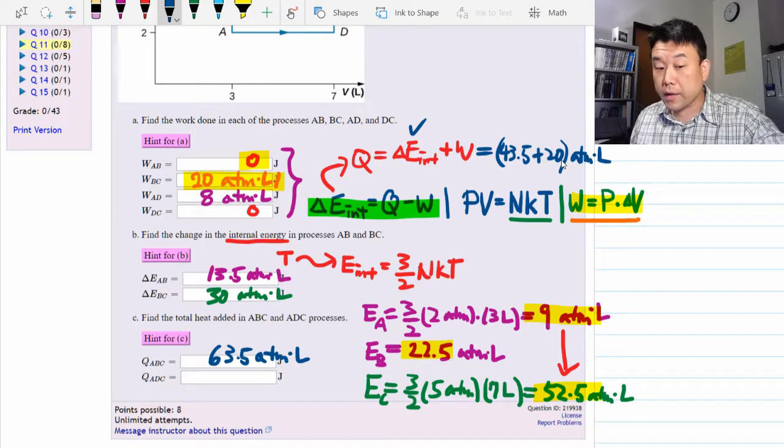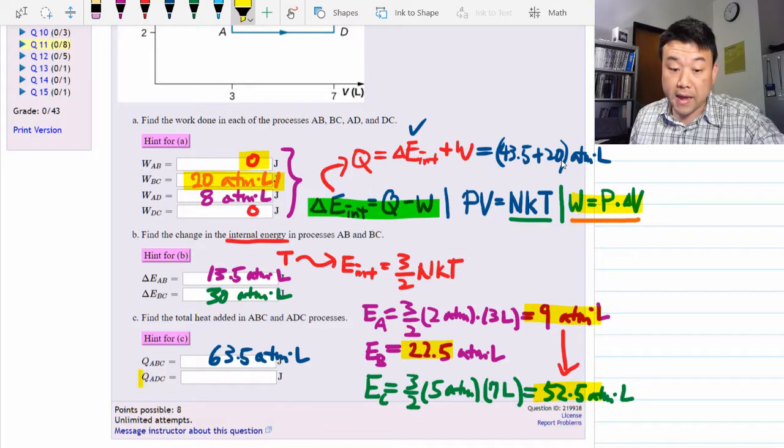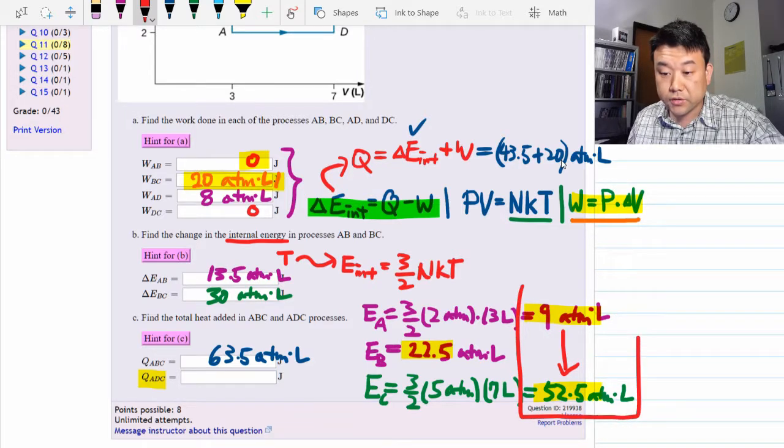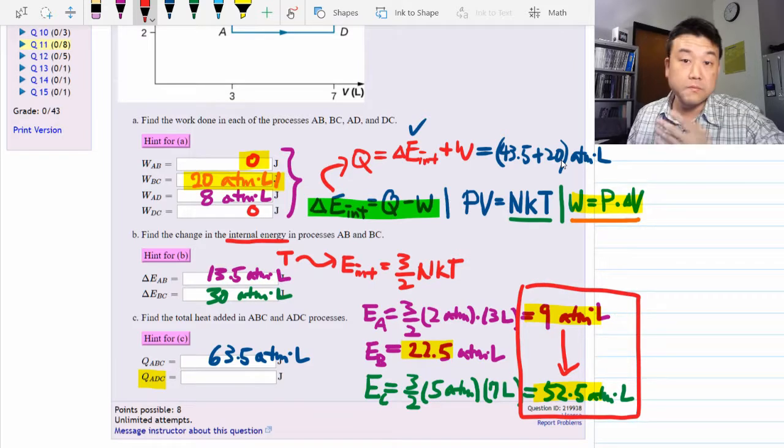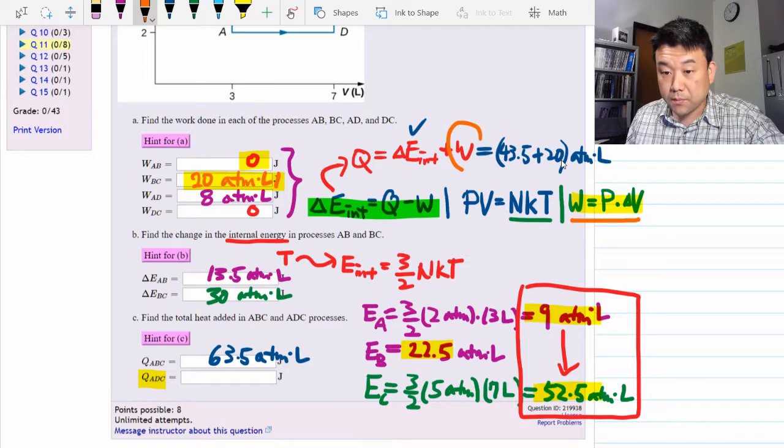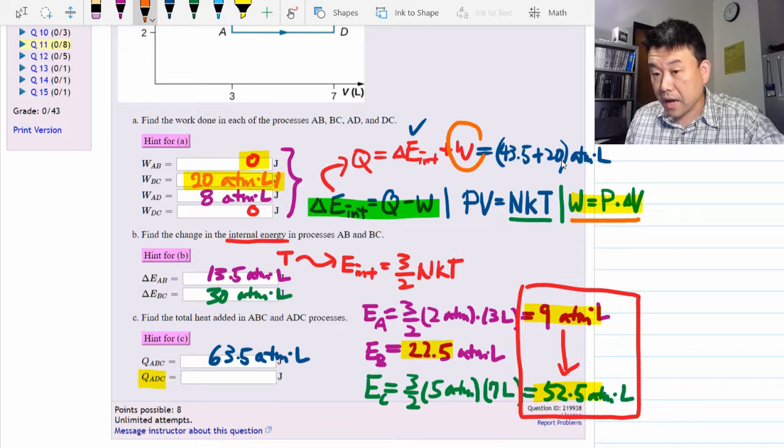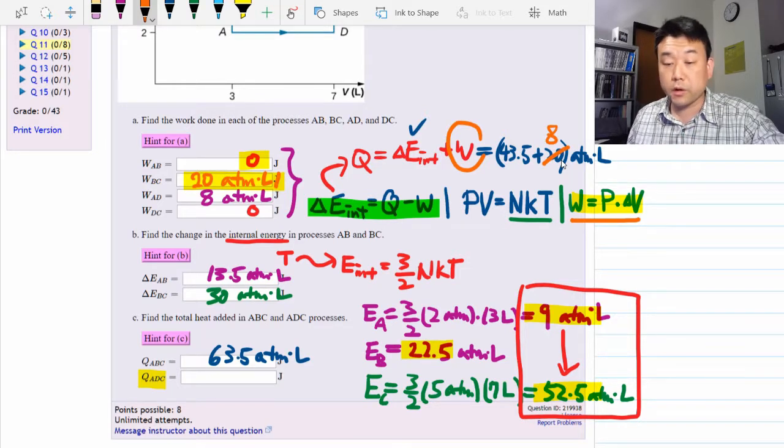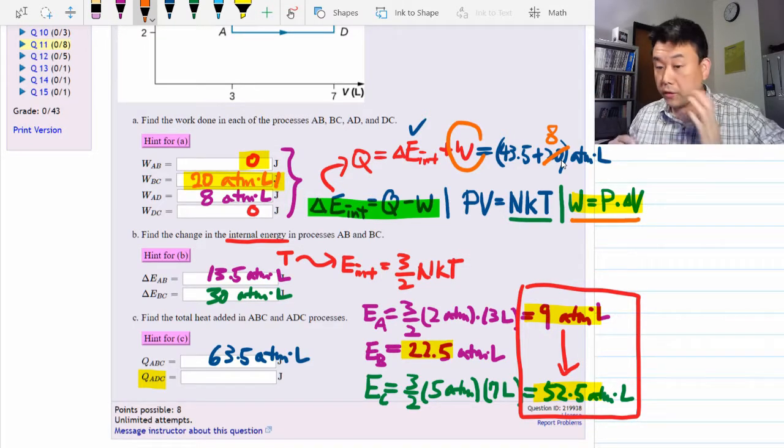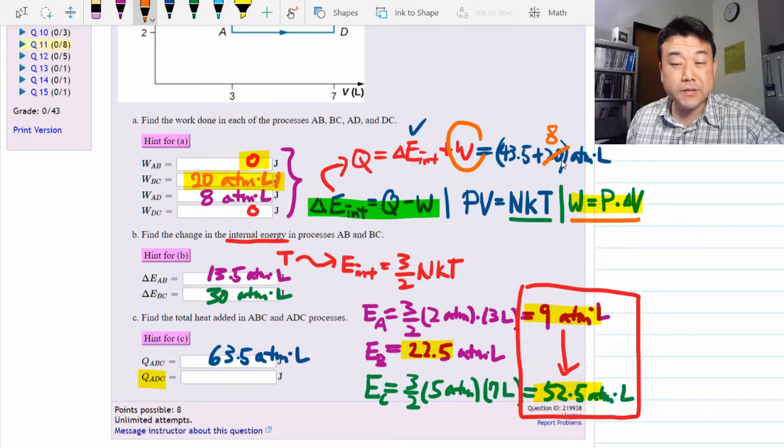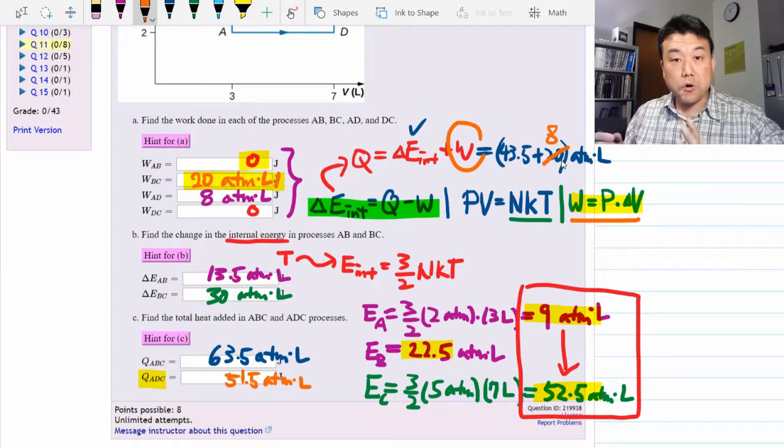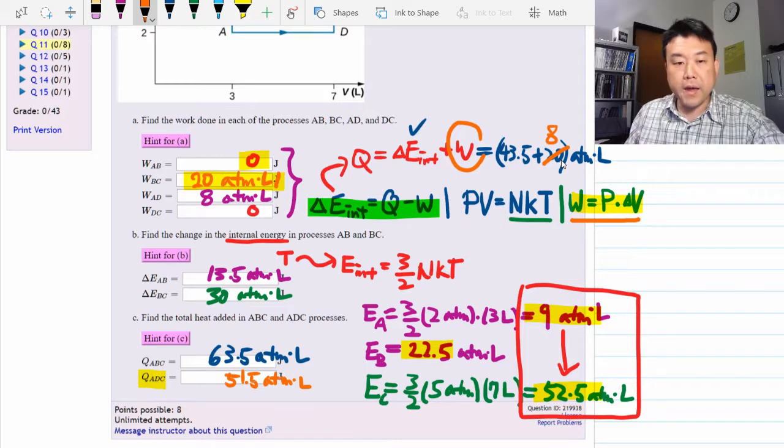And actually, we have done most of the work for the lower path ADC as well. Because we can continue to use the same difference in the internal energy. As long as the end points are the same, change in the internal energy is the same. So the only thing that changes is how much work is done. Instead of 20 atmosphere liter, only 8 atmosphere liter of work was done in the path ADC. So the total heat added must be 43.5 plus 8, 51.5 atmosphere liter. So that's it.